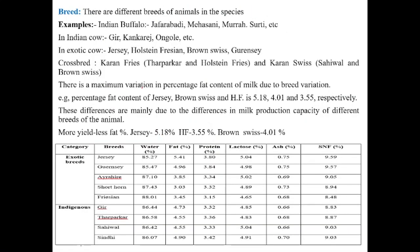The second animal factor is breed. Different breeds of animals differ in their milk composition. Indian buffalo breeds include Jaffarabadi and Murrah. Indian cow breeds include Gir, Kankrej, and Sahiwal. Exotic breeds include Jersey, Holstein Friesian, and Brown Swiss. Crossbreeds include Karan Fries and Karan Swiss. The maximum variation among breeds is seen in the fat percentage of milk.